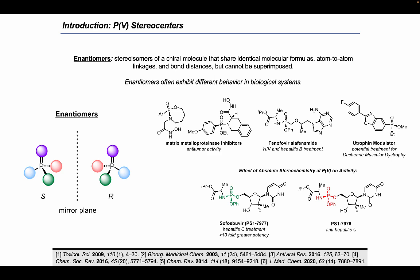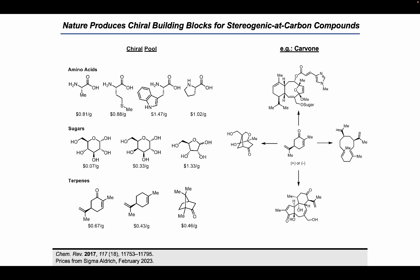Evidently, the absolute configuration of a chiral molecule can have a significant effect on its biological activity, and consequently it is important to have approaches and methods for accessing these molecules in their enantioenriched or diastereomerically enriched form, particularly in a pharmaceutical context. One robust and reliable way for doing so in the synthesis of stereogenic-at-carbon compounds is to construct these targets using chiral building blocks from the chiral pool.